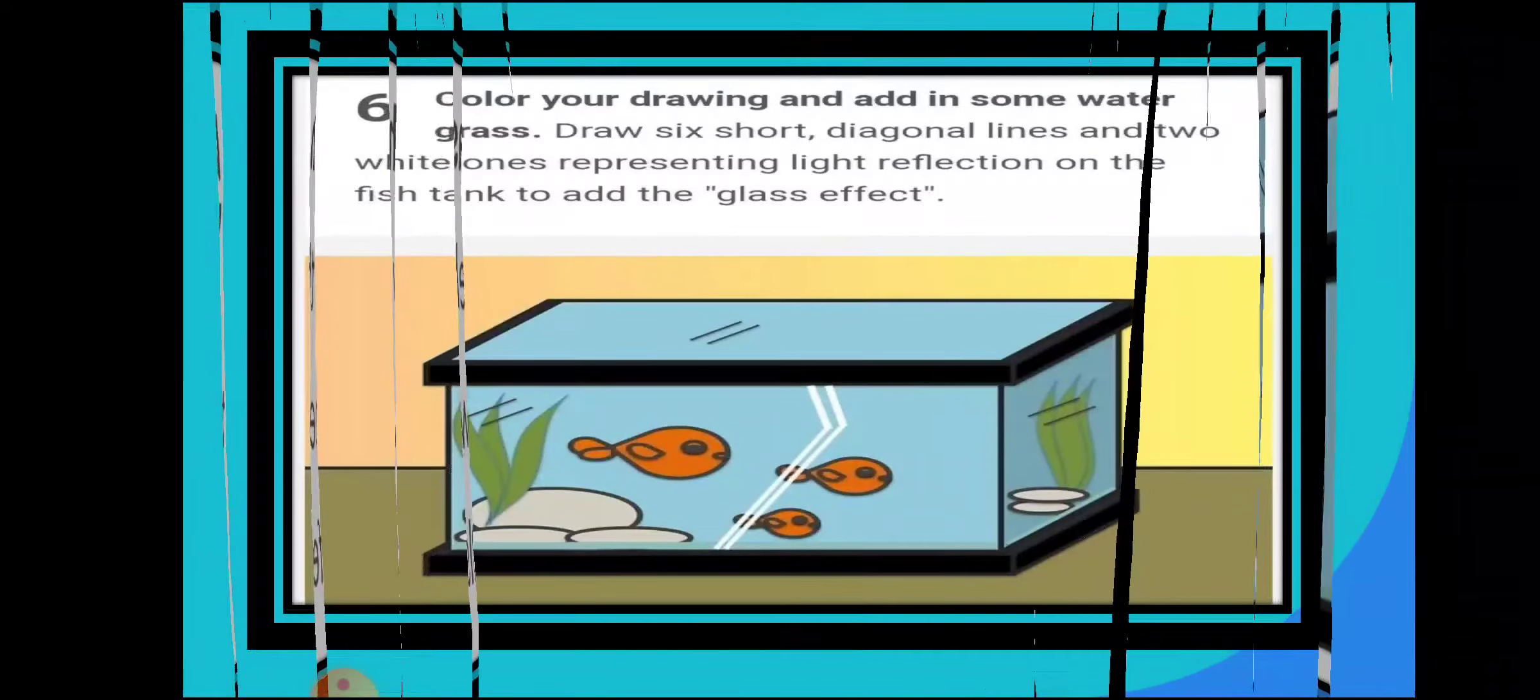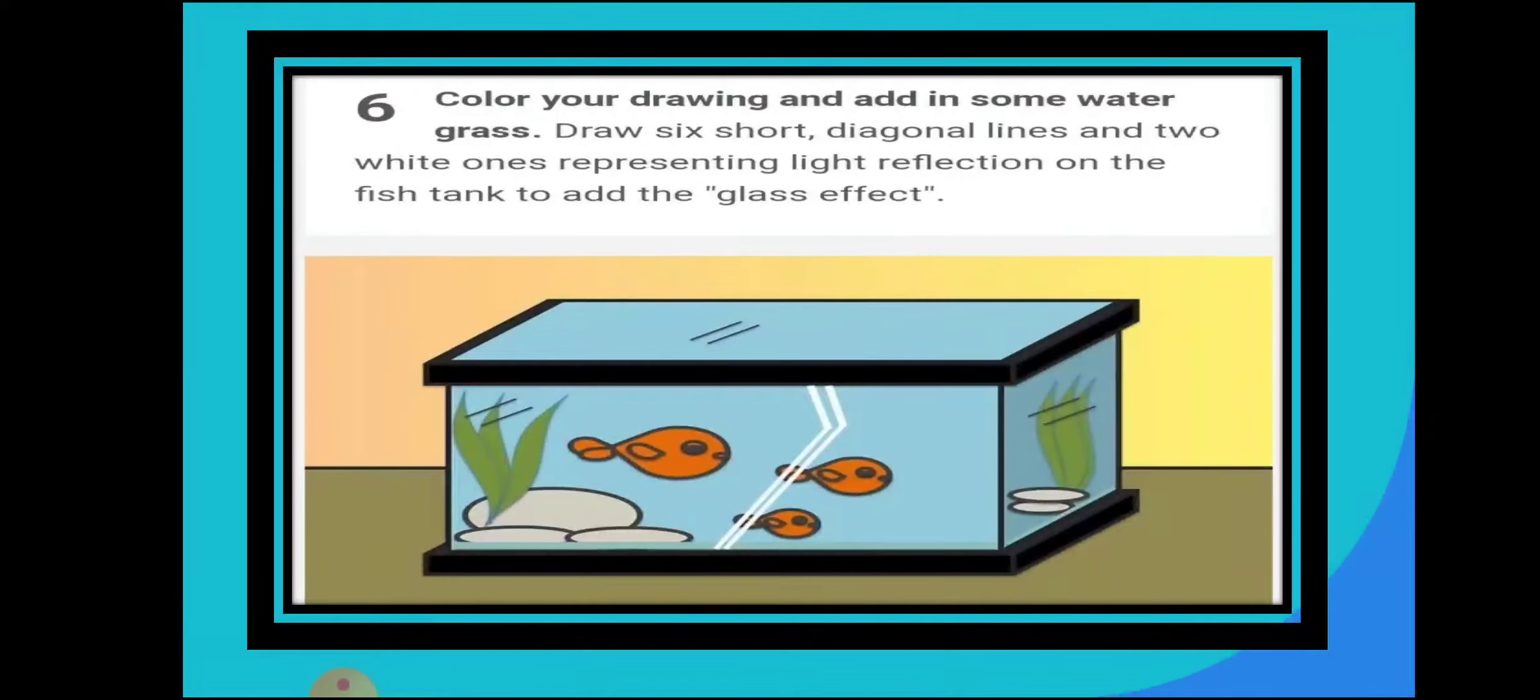Now step 6. Color your drawing and add in some water grass. Draw 6 short diagonal lines and 2 white ones representing light reflection on the fish tank to add the glass effect.